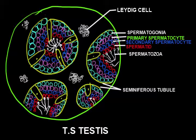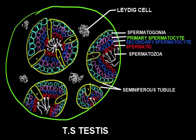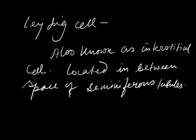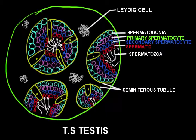Beside the spermatogenic cells, the seminiferous tubule contains another structure — the Sertoli cells. These are the Sertoli cells, which are elongated structures. There is also another very important structure of the testes: the Leydig cell, also known as interstitial cells, as they are located in the interstitial space between the seminiferous tubules.